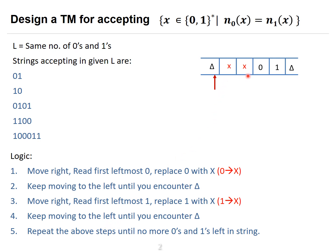Once the leftmost zero is replaced by X and the leftmost one is replaced by X, these steps keep repeating. The next leftmost zero is replaced by X, then the next leftmost one is replaced by X. These steps repeat until no more zeros and ones are left in the string. This is about the logic of the problem statement. Let's move to the design of the transition diagram.